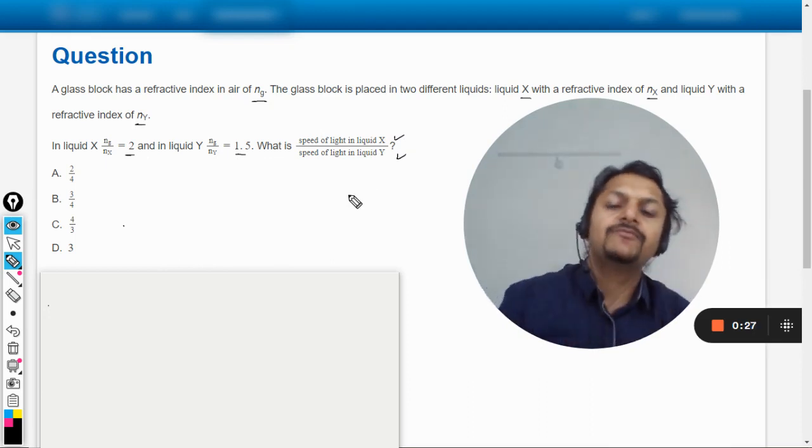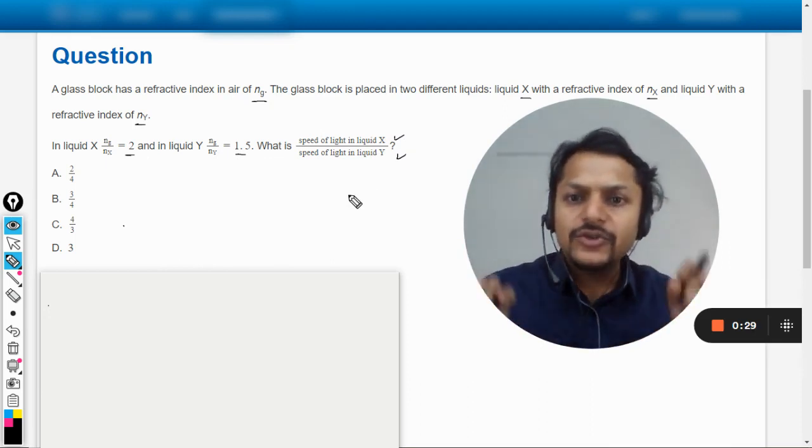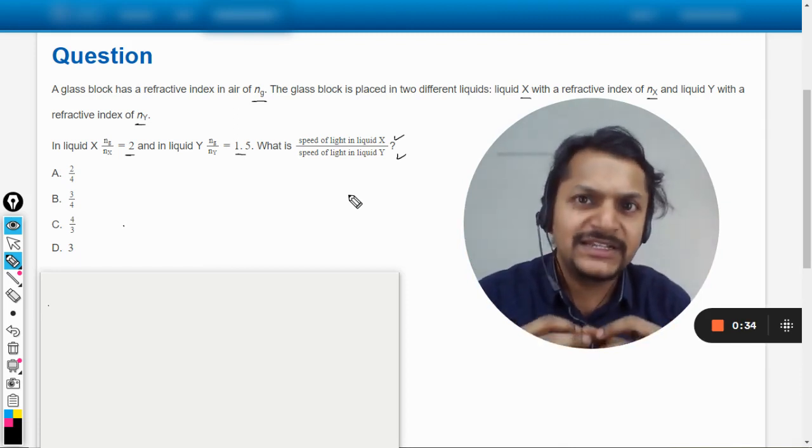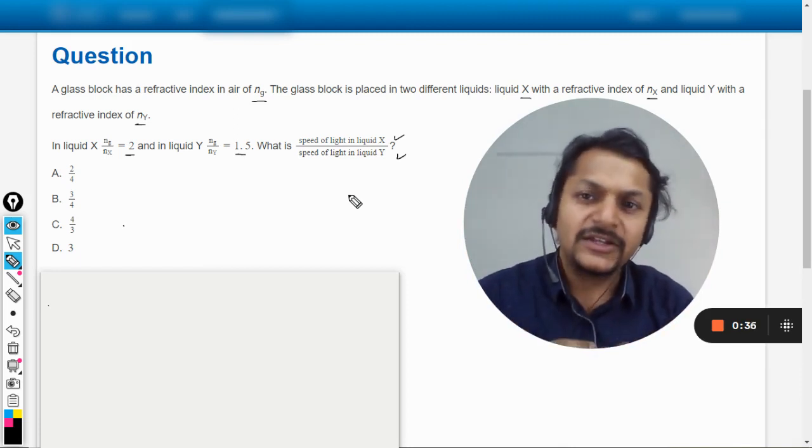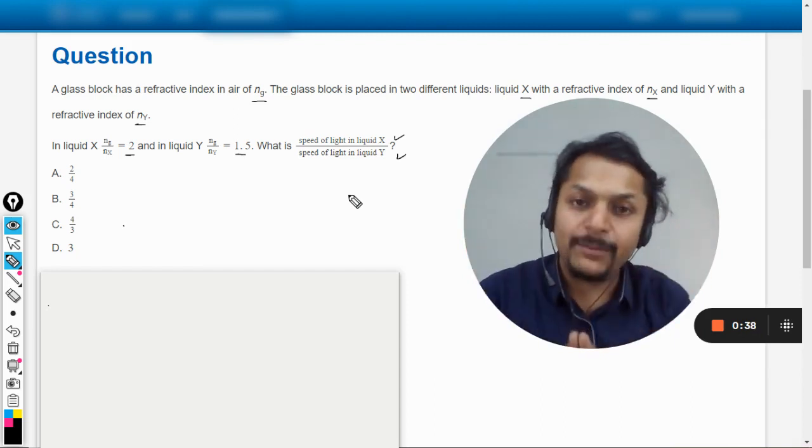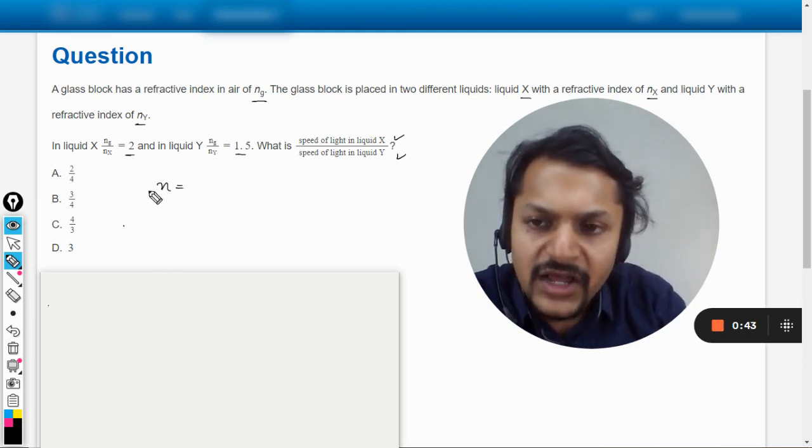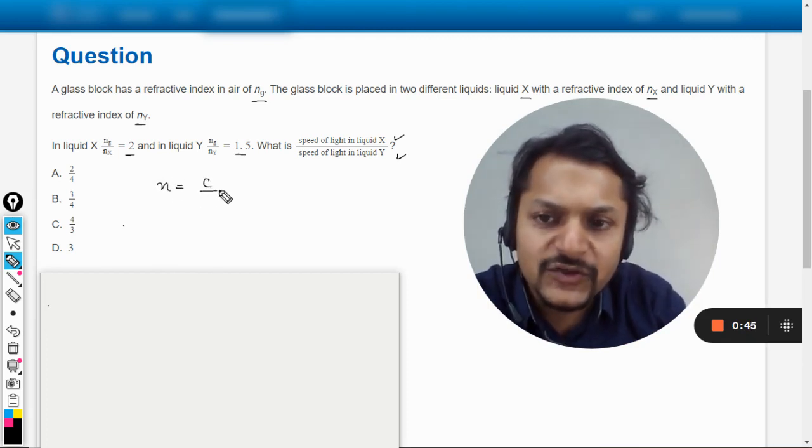Dear students, to understand this question properly - this question is quite confusing, I would say. The statement is bulkier and it's difficult to imagine what is happening here. Just try to understand how the refractive index is defined. The refractive index is defined as the speed of light in air divided by the speed of light in the medium.